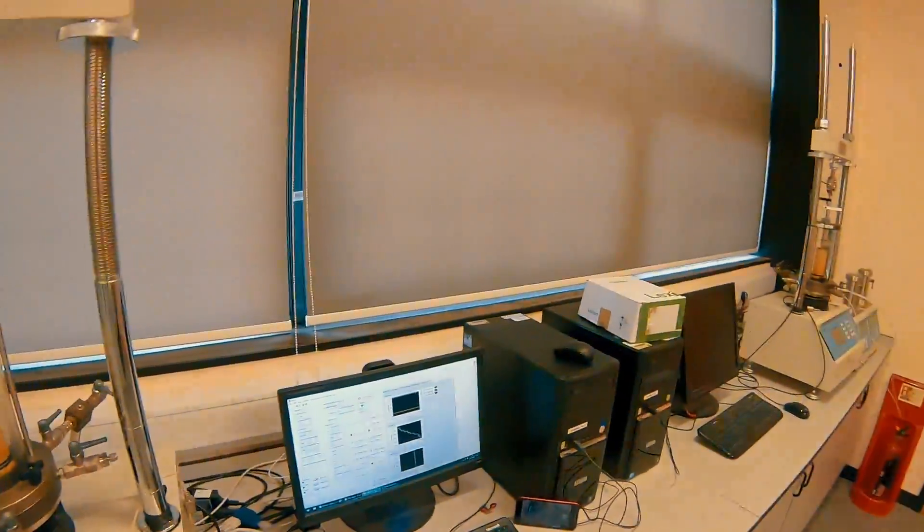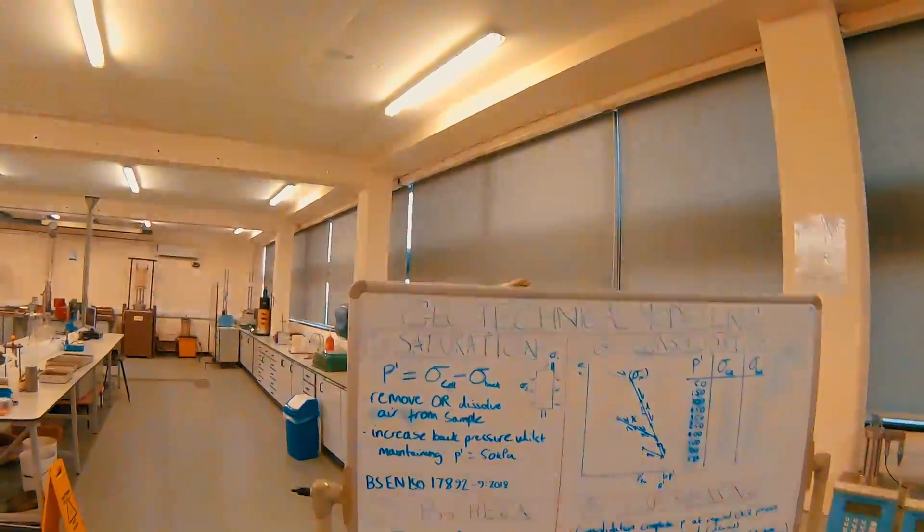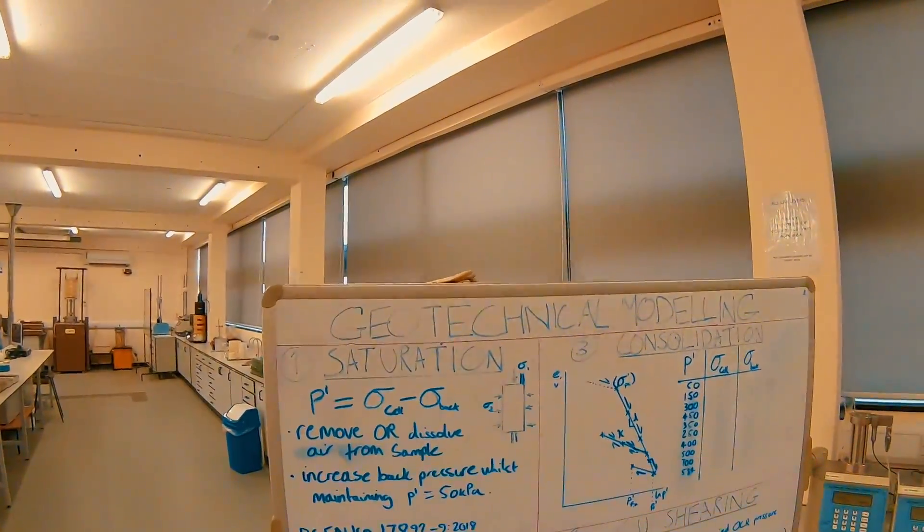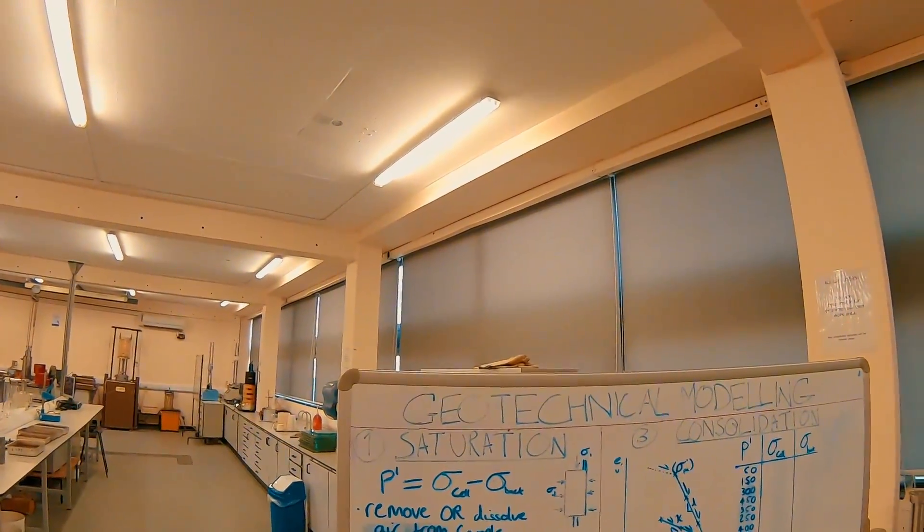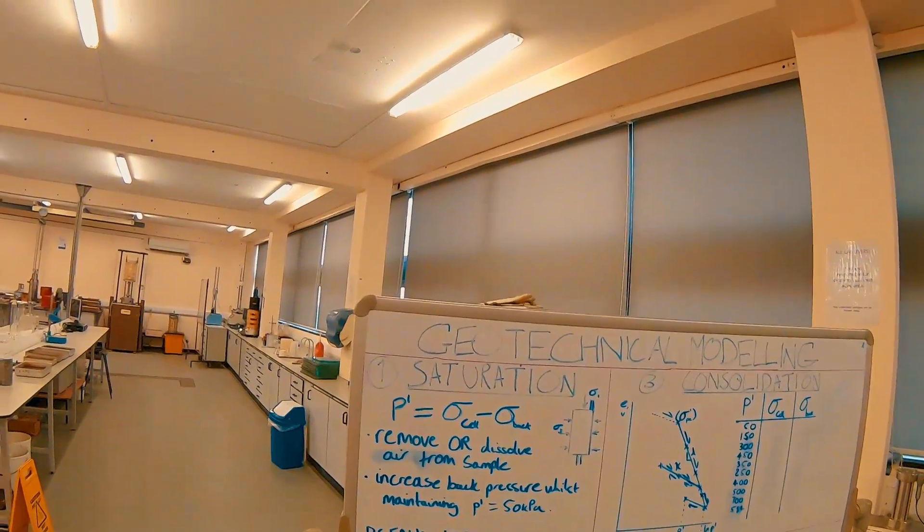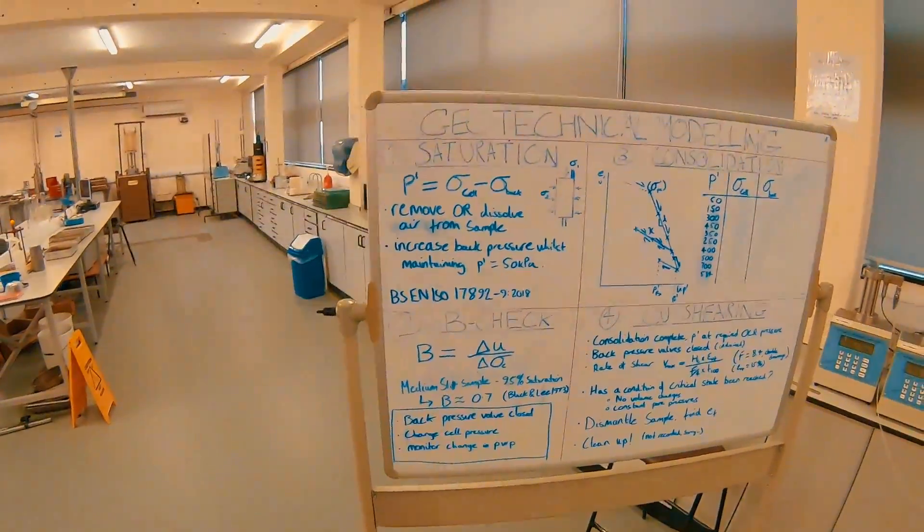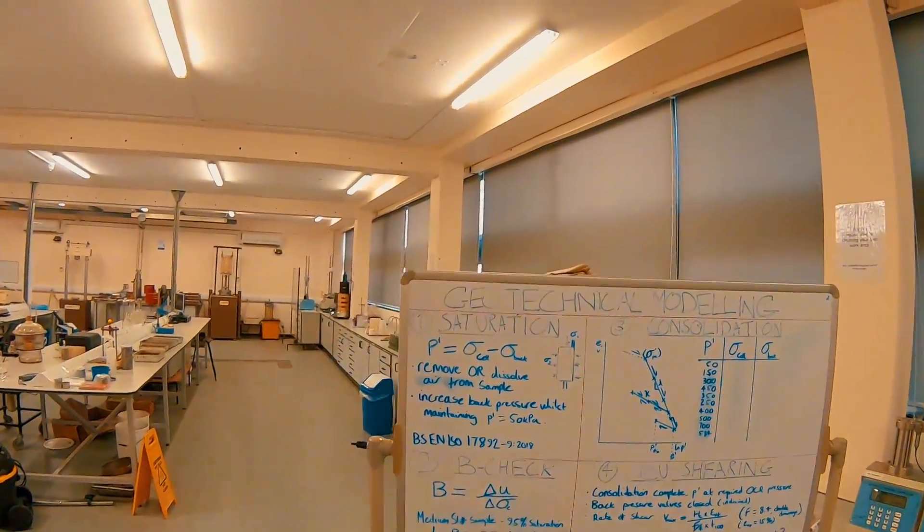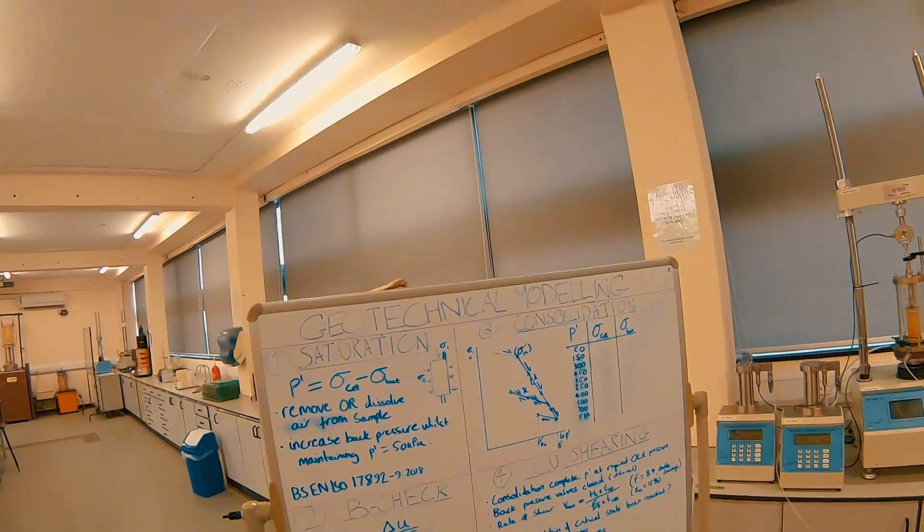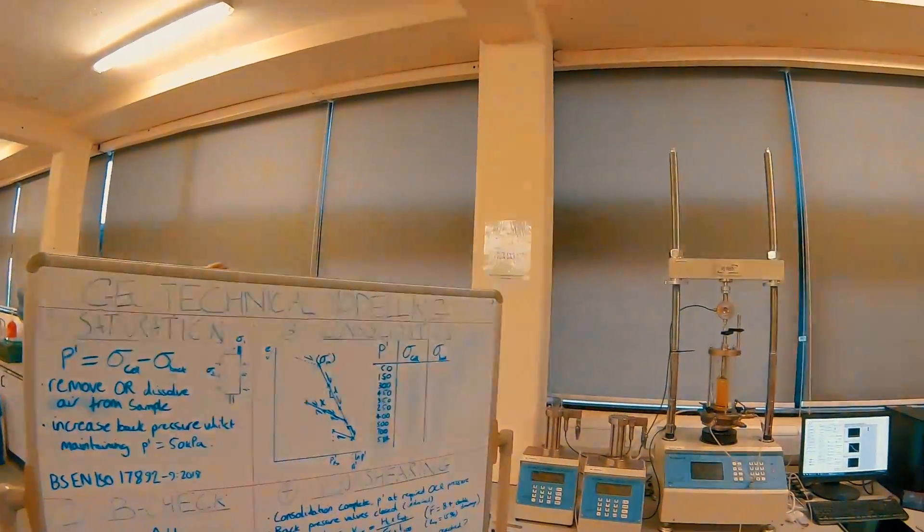During once we flushed our sample, I should say, and the air has been removed, we need to think about saturating our sample. If we take a look at the board I've drawn up here for each stage and we look at the saturation phase, we can find p-dash in this scenario during saturation by subtracting the back pressure from the cell pressure. The aim of saturation is to remove or dissolve air from within our sample and completely saturate all the voids with water, which of course we treat as incompressible whereas air wouldn't be. In this scenario to do that, we need to increase the back pressure to dissolve the air within the sample whilst maintaining that positive p-dash of 50 kilopascals.